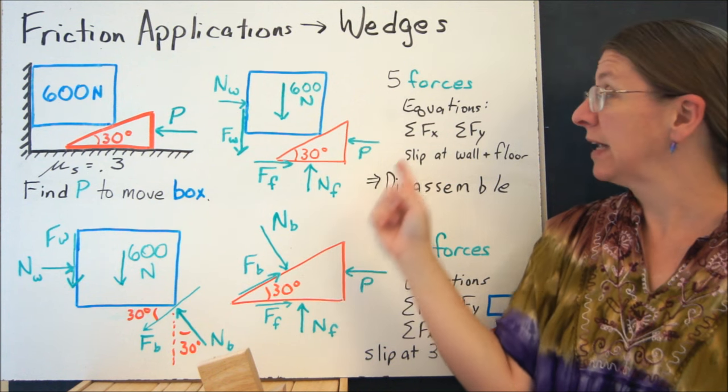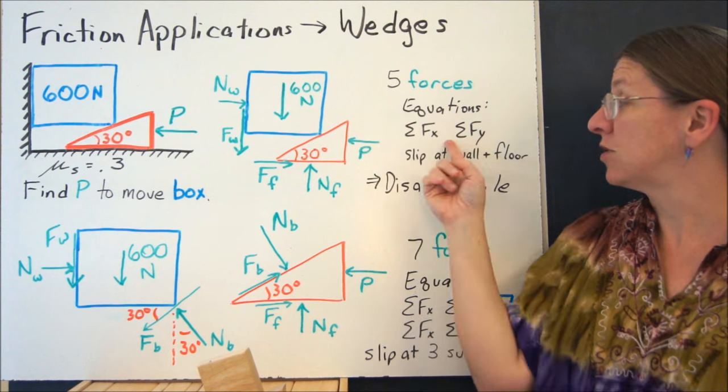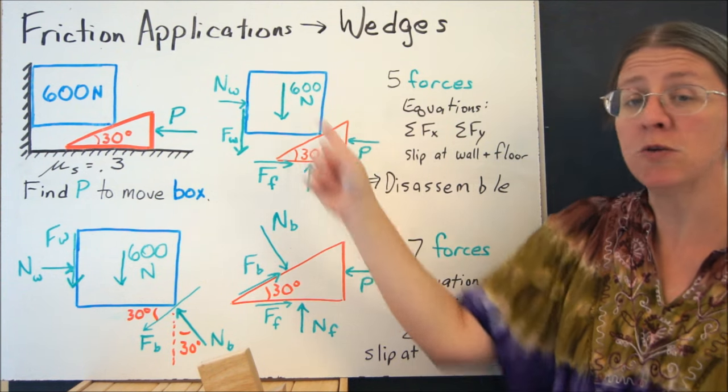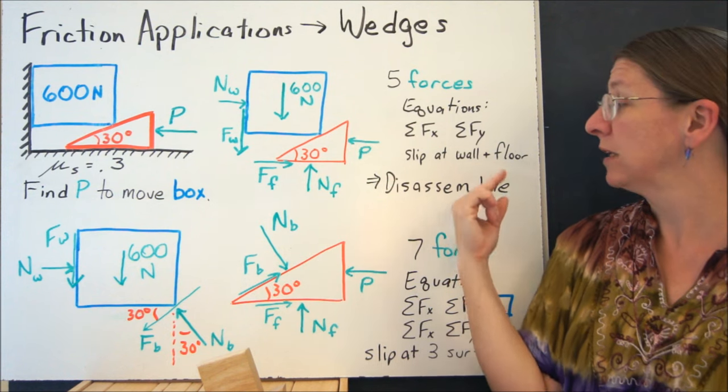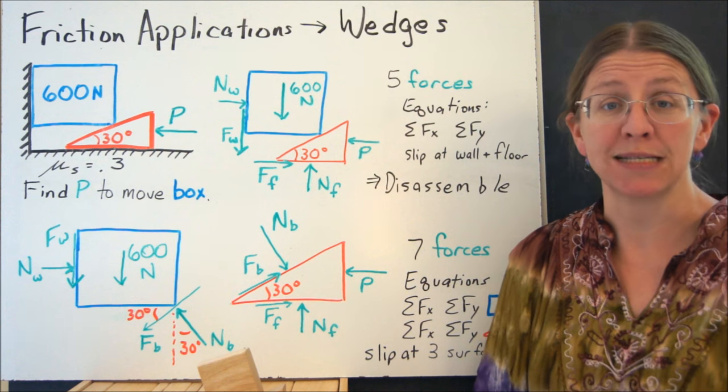Unfortunately, when you write all that together, you've got five forces. Equilibrium is only going to give you these two equations, the sum of the forces in the x and the y. Even if you assume it slips in both places, that only gives you two more. You can't handle that, which brings us to our very first example of a system.